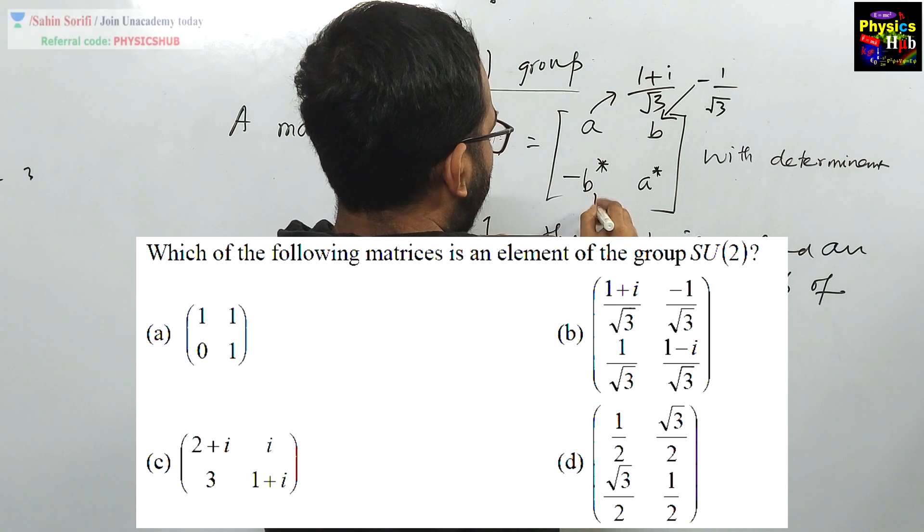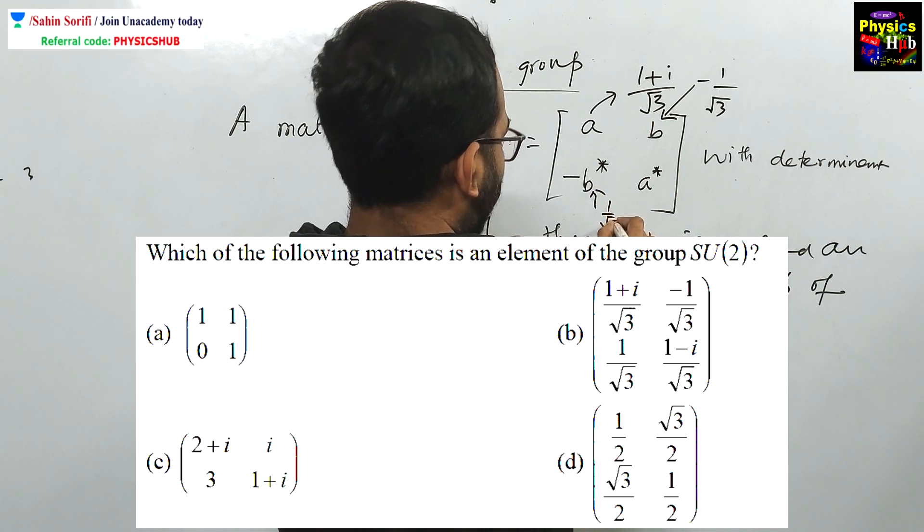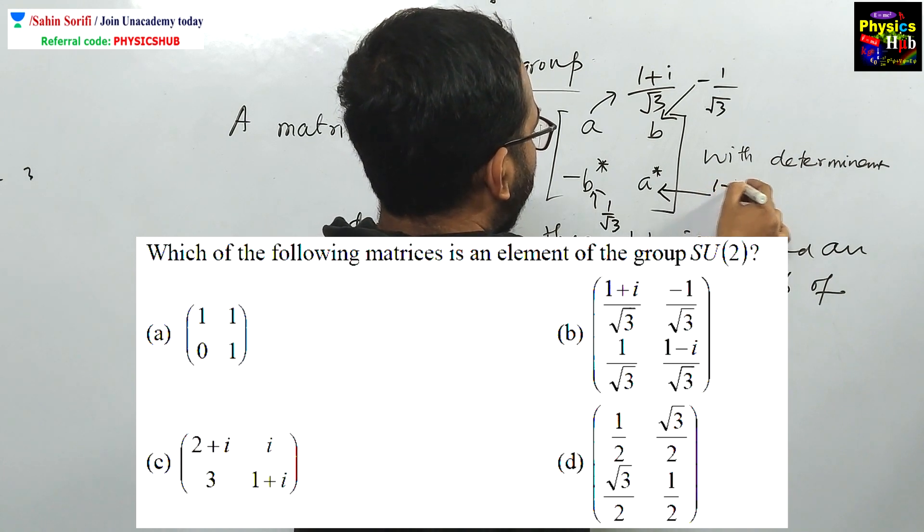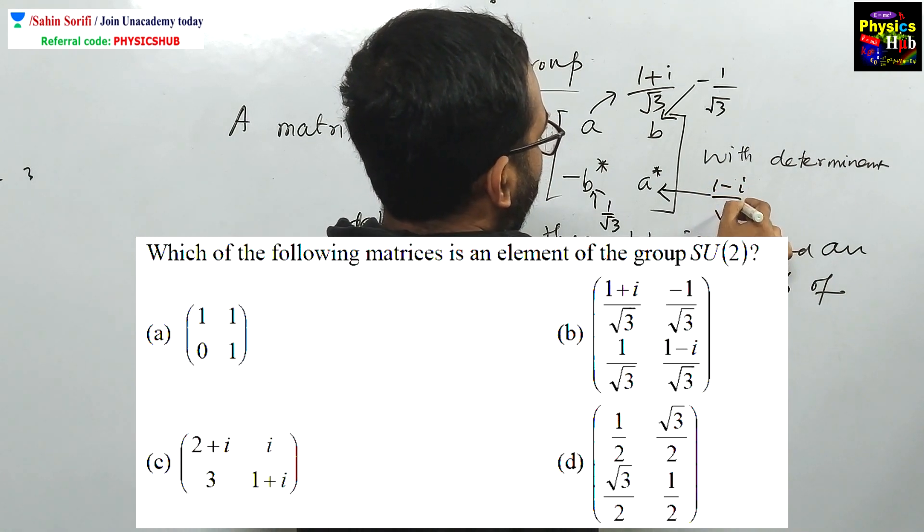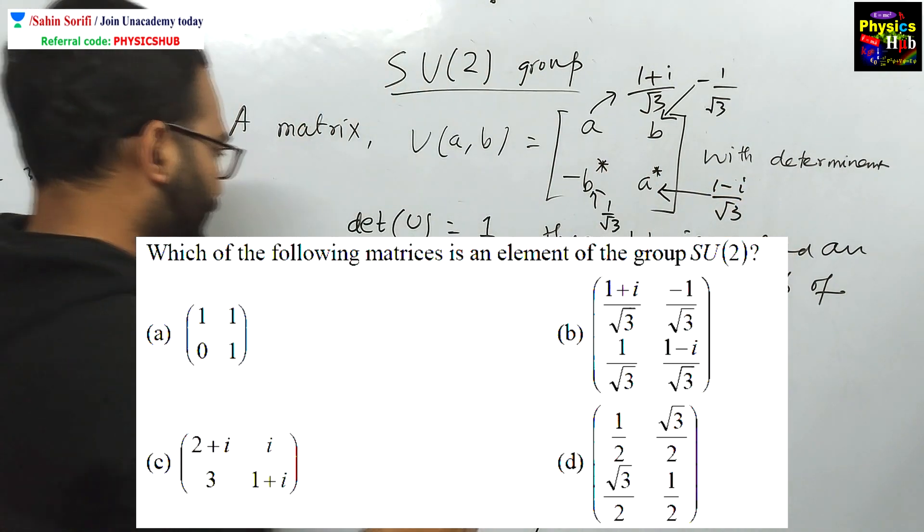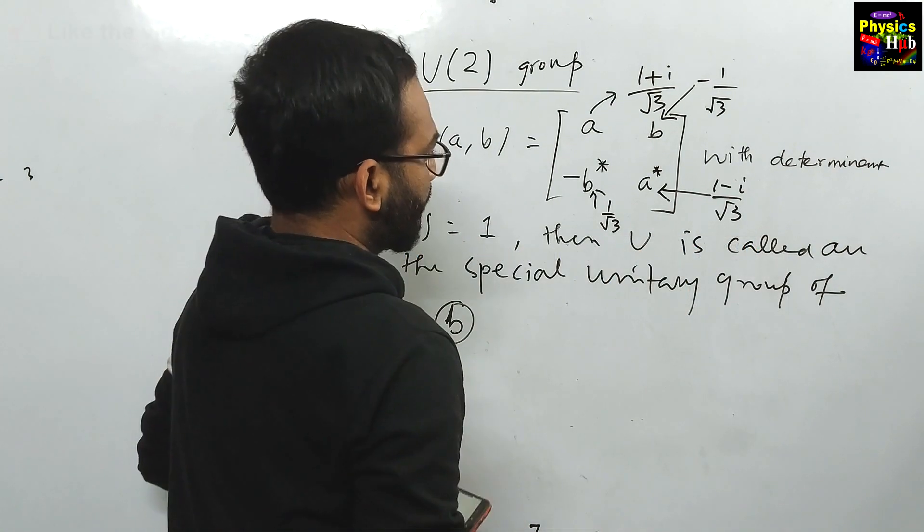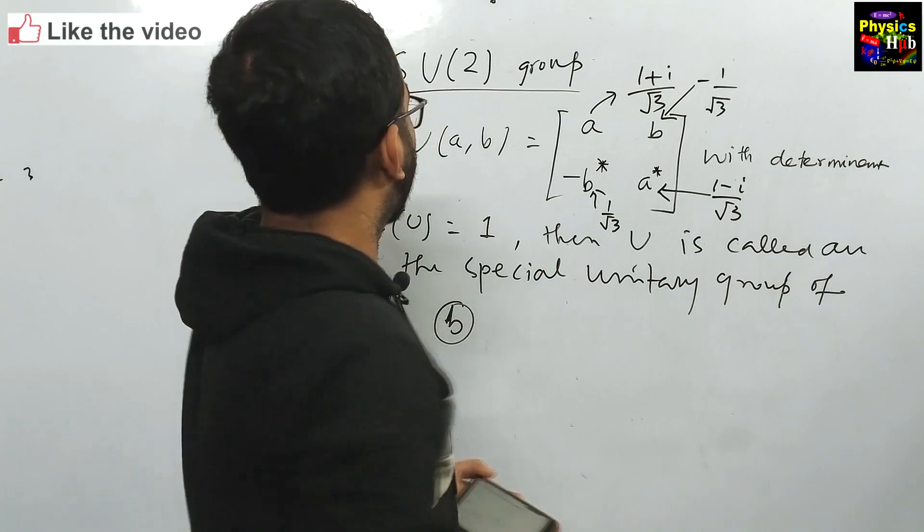So minus B star will become 1 upon root 3 and A star will become 1 minus i upon root 3. Now if this determinant given in option B, if the determinant is 1, then we can see that it is the element of this SU(2) group.